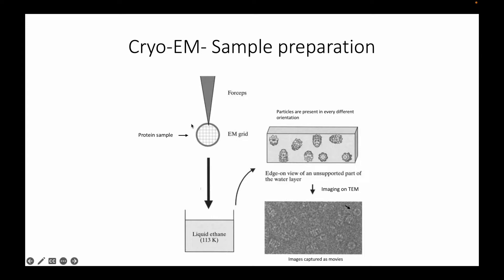First of all in cryo-EM we visualize the sample on something called an EM grid. It's basically like a circle with a mesh of copper in it and it also has a carbon coating with tiny pores in it.